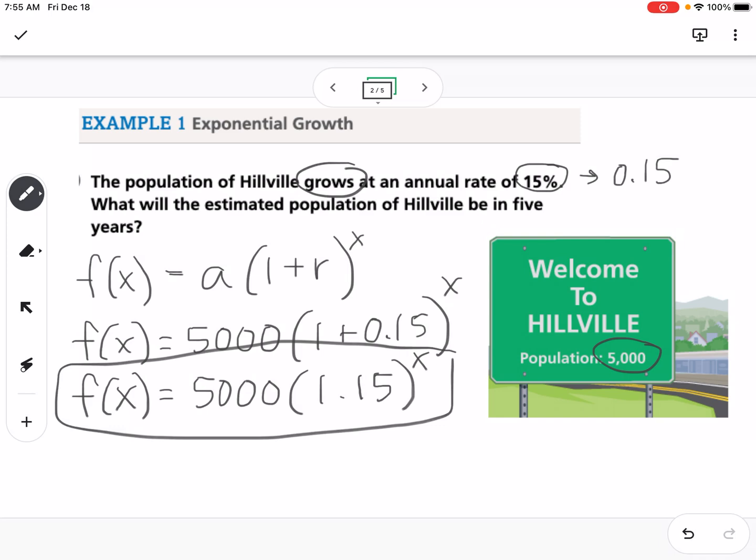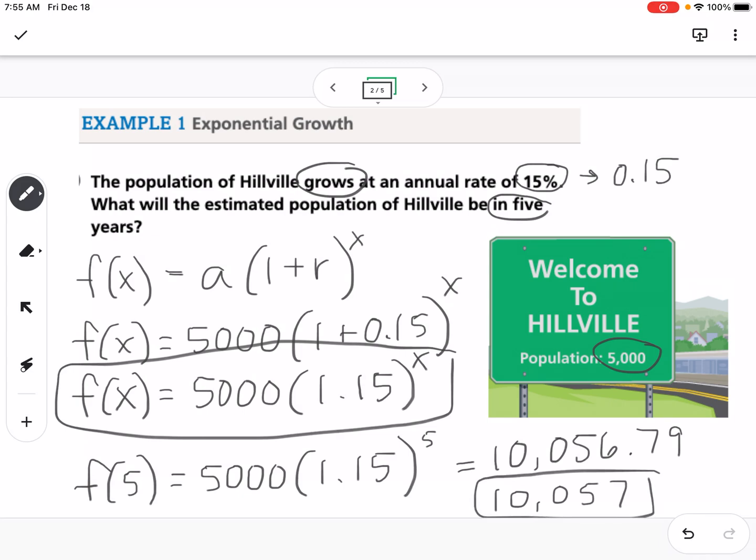Now it asks us what will the population be in 5 years? So that means I'm finding f(5), which would be 5,000 times 1.15 to the 5th power. So if I plug that into my calculator, I'm going to get 10,056.79, but when we're talking about things like people, we need to round to the nearest whole number. So this would be 10,057.